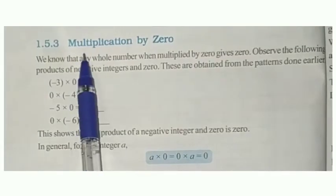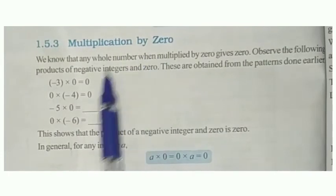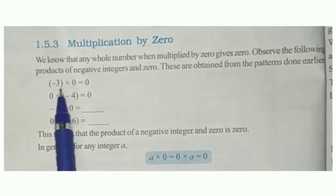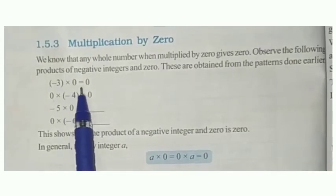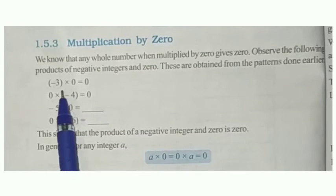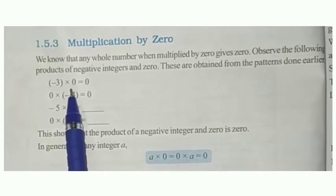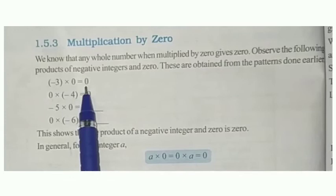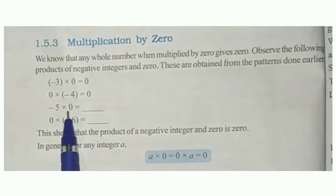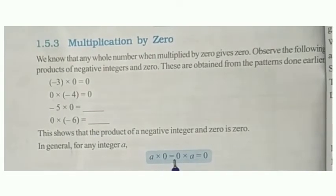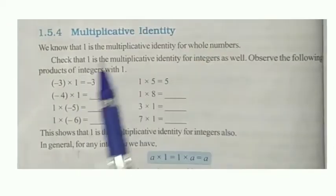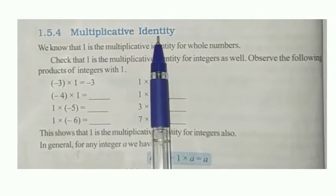Next, multiplication by 0: whenever we multiply any integer with 0, we will get 0 itself. It is a very familiar concept — whatever number you take and multiply by 0, we get 0. So minus 5 into 0 is 0, and 0 into minus 6 is also 0. So a into 0 equals 0 into a, which always equals 0.